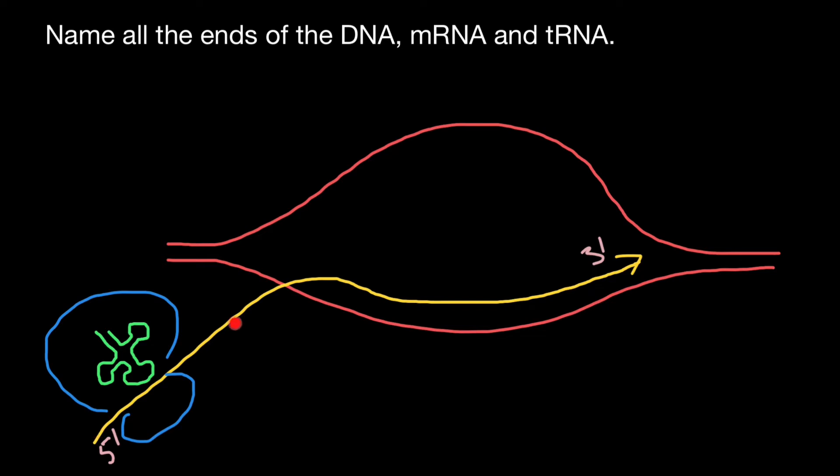And because messenger RNA uses the template strand of the DNA, the template strand of the DNA should have five prime end here and three prime end here.